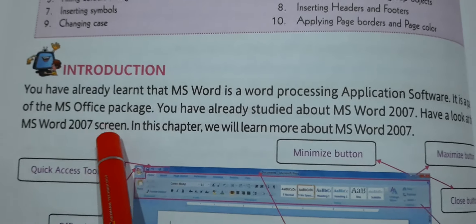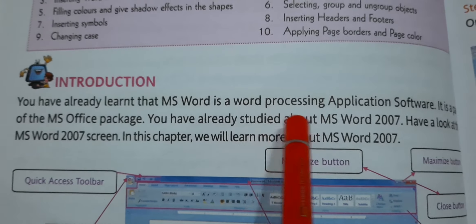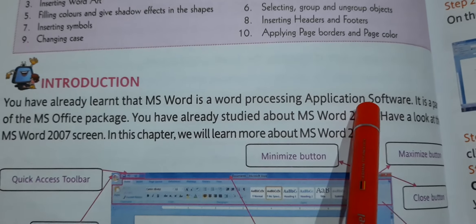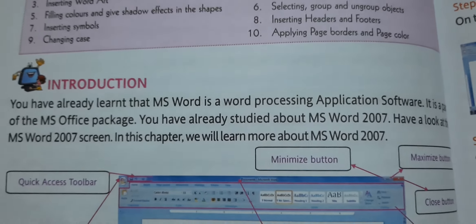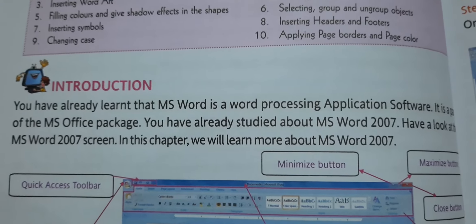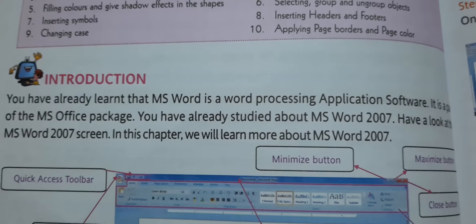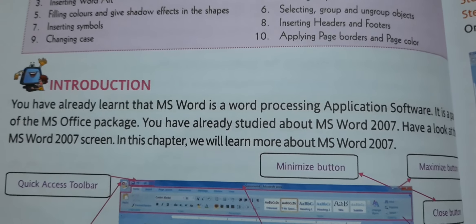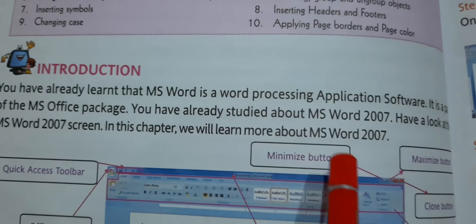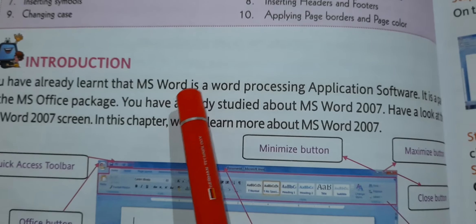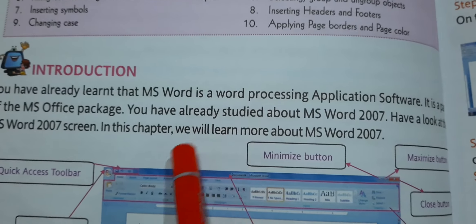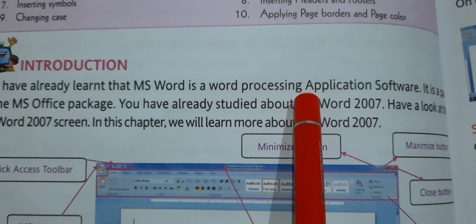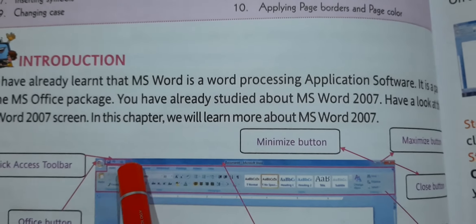Let's start the chapter with the introduction. You have already learned that MS Word is a word processing application software. Application software always aims at a particular work — they have a target to fulfill. So what is the purpose of MS Word? It is a word processing software, and I usually compare the word processor concept with the food processor.